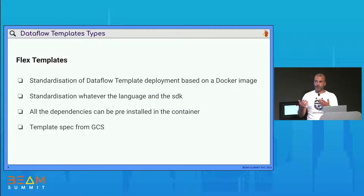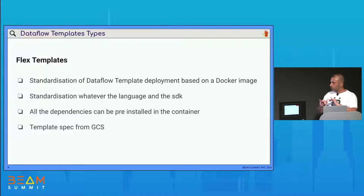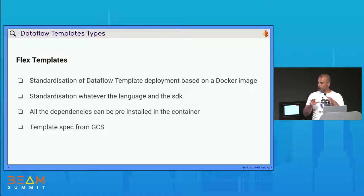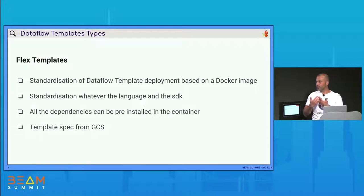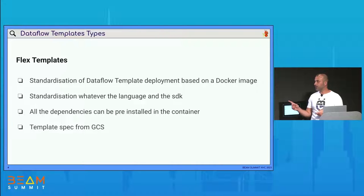We will need to pass different parameters for Java and Python, but the commands are the same. Whatever the language, the way is the same. Also, with a Dockerfile, we can prepare and install all the dependencies inside the container — no need to install elements from a local machine. Flex Template is also based on a JSON configuration and JSON spec file put in a Cloud Storage bucket.